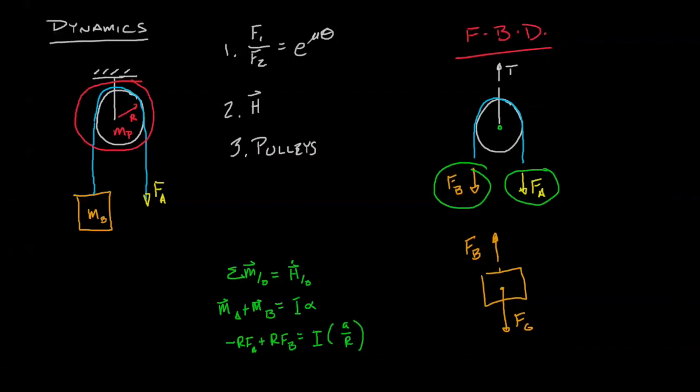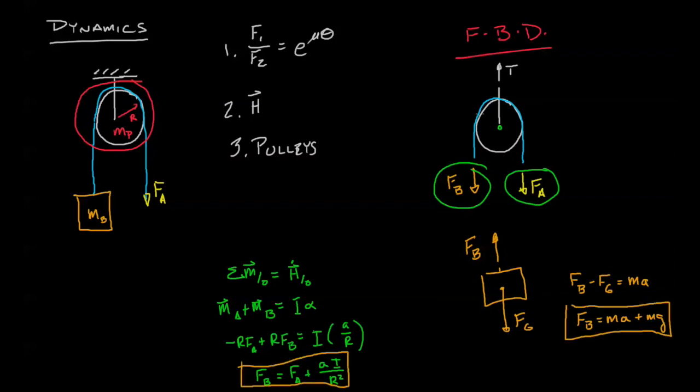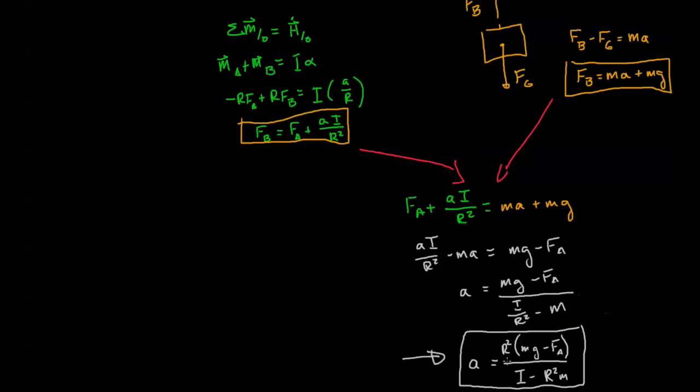Solving for F of B we get this equation. And from our second free body diagram we see that the force of B minus the force of G is going to equal the mass times the acceleration of the body. So we solve that for force of B and we get mass times acceleration plus Mg. We can combine these to solve for acceleration.